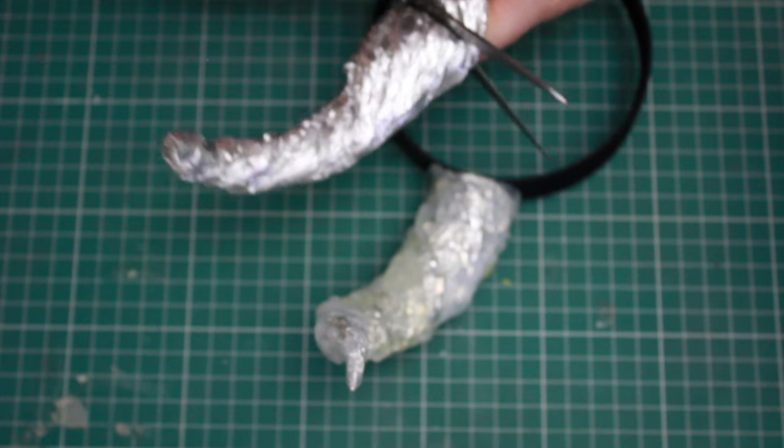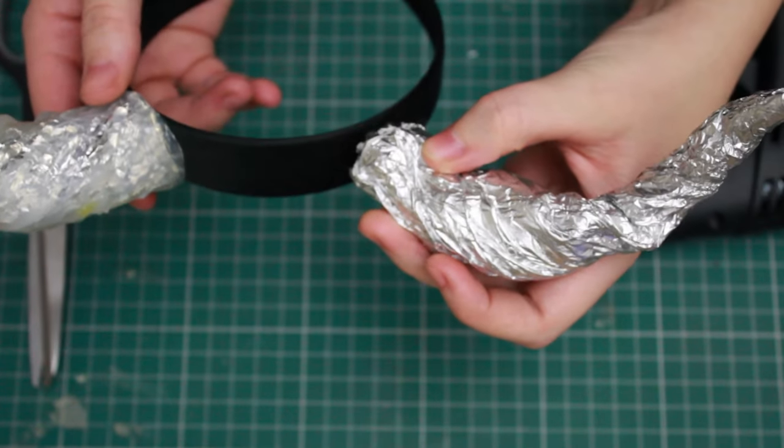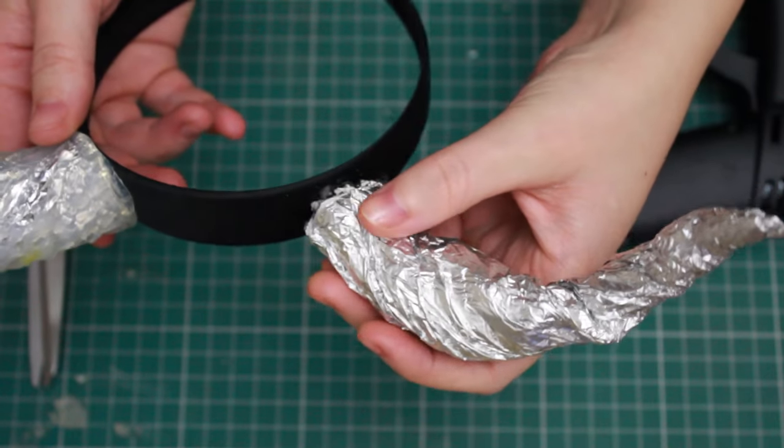Now as it turned out, I actually twisted this the wrong way around so that it would match the other horn that I've already done. So I just went ahead and twisted it in the opposite direction, and tin foil is pretty forgiving for that.